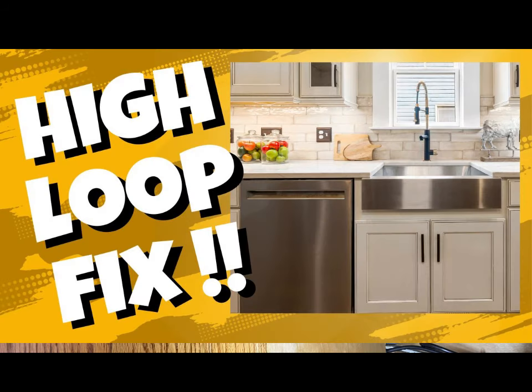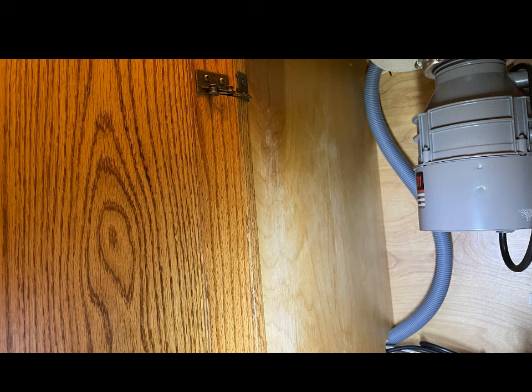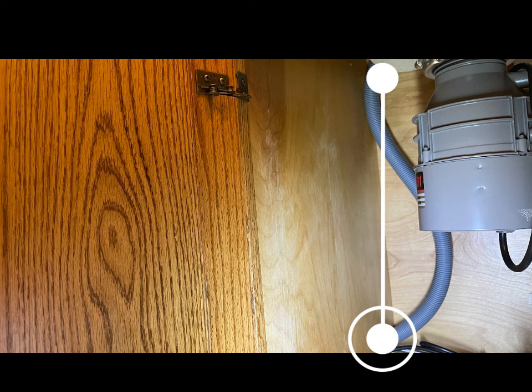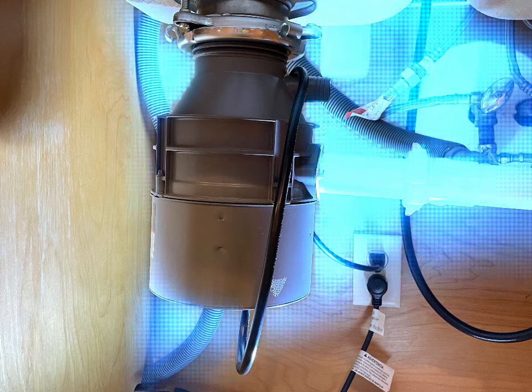Okay, so what is a high-loop? It just means you need to get the drain line up as high as you can and then back down again to your plumbing. If the drain line is installed with a proper high-loop, the drain is raised as high as possible and connected to the underside of the countertop or cabinet, creating a high-loop. It basically looks like an upside-down P-trap.